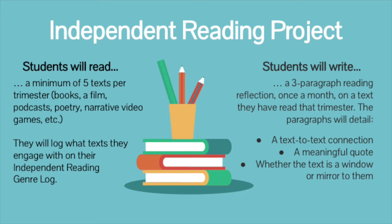The second part of the independent reading project is to write a three-paragraph reading reflection once a month on something they have read or explored that trimester. The paragraphs will detail a text-to-text connection, a meaningful quote, and whether the text is a window or mirror to them. The writing portion is to strengthen their general skills.